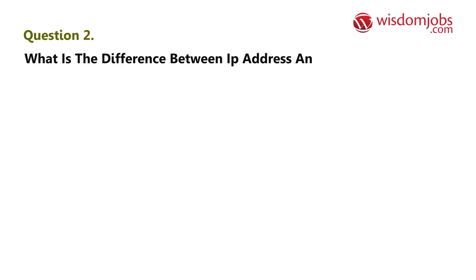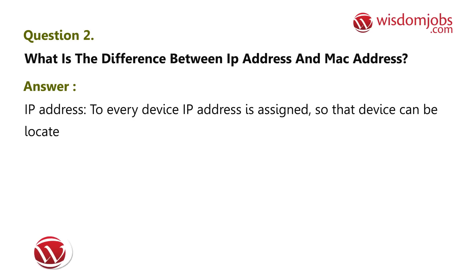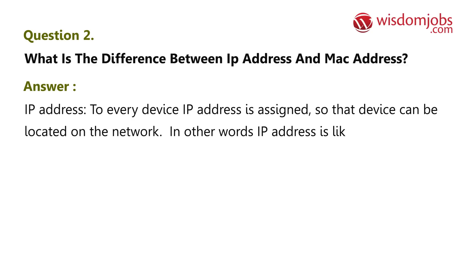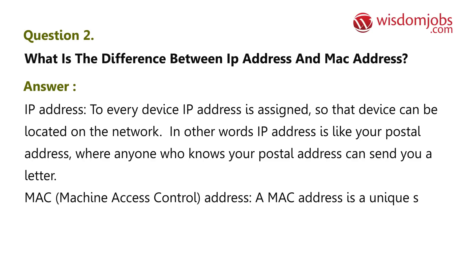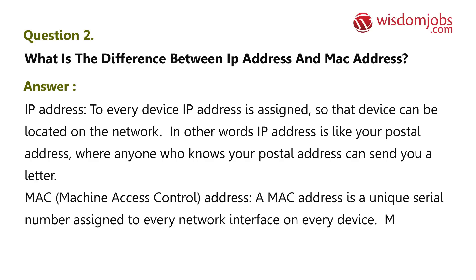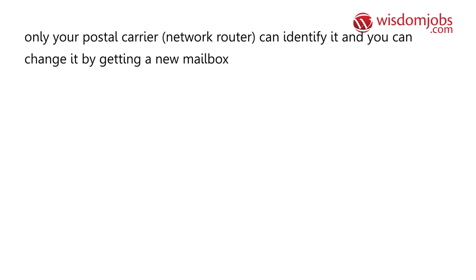Question 2: What is the difference between IP address and MAC address? Answer: An IP address is assigned to every device so that the device can be located on the network. An IP address is like your postal address where anyone who knows it can send you a letter. A MAC (Machine Access Control) address is a unique serial number assigned to every network interface on every device — like your physical mailbox, only your postal carrier (network router) can identify it.